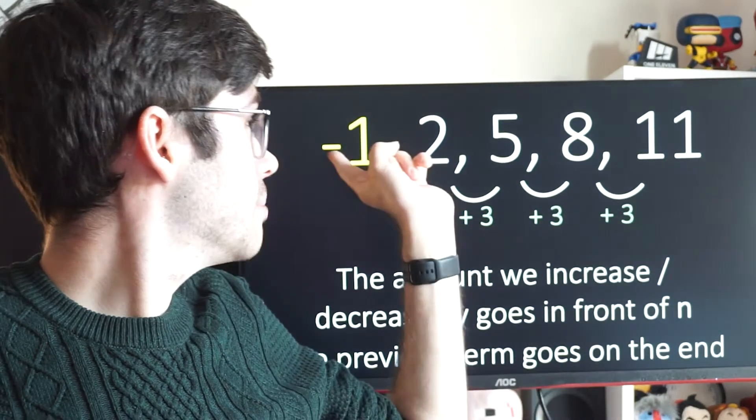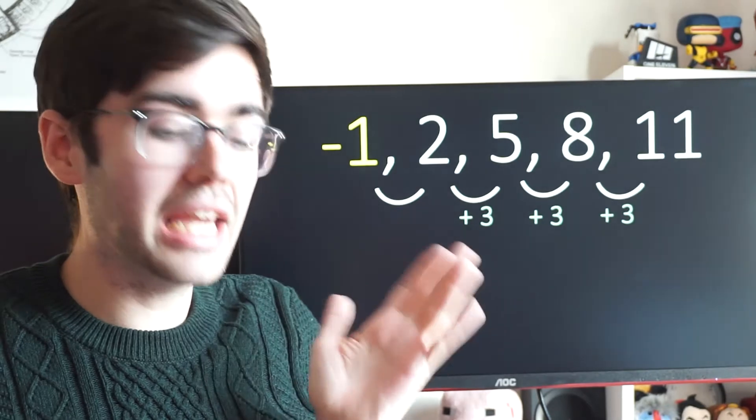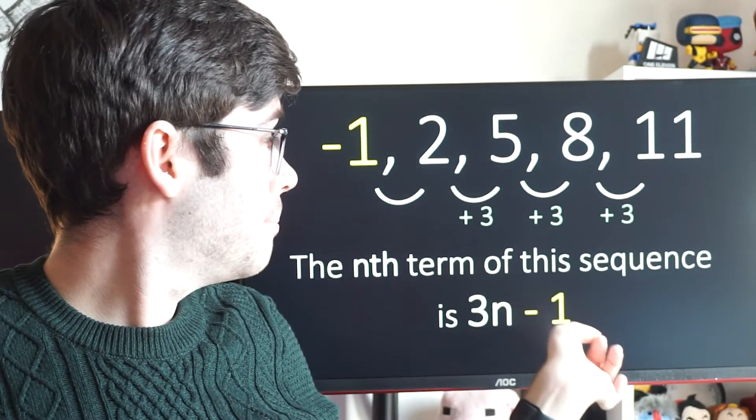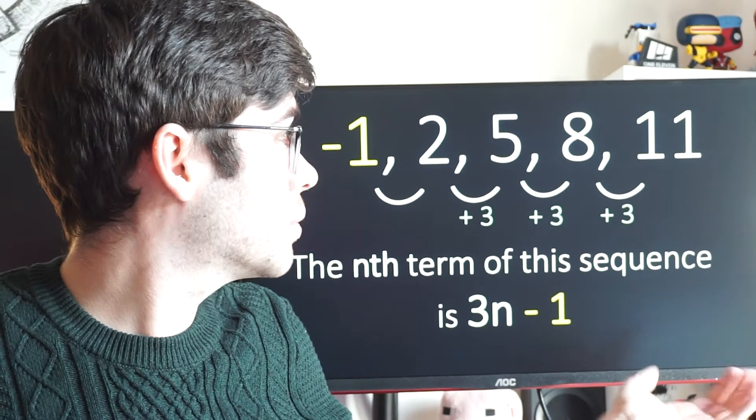So plus 3 goes at the start, minus 1 goes on the end. And we get 3n minus 1. And that is the nth term for the sequence.